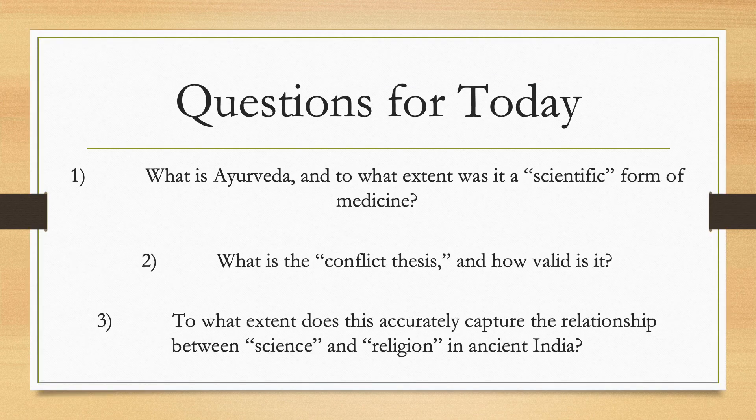For the better part of the last 2,000 years, Ayurveda has been the dominant form of medicine practiced in India. It emerged at a time when India was becoming an economic and political powerhouse on the Asian subcontinent, and today Ayurveda has become a global phenomenon. So, what exactly is Ayurveda? Where did it come from? And to what extent was it a scientific form of medicine?